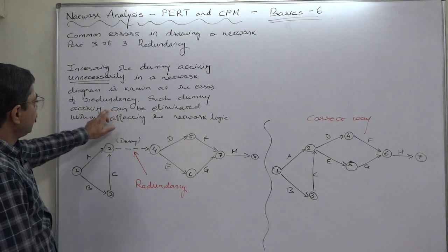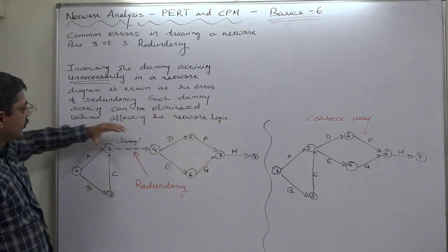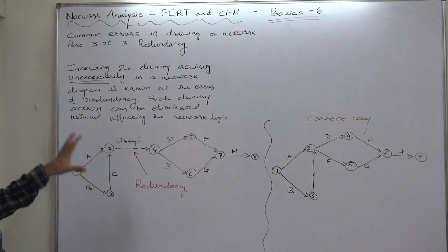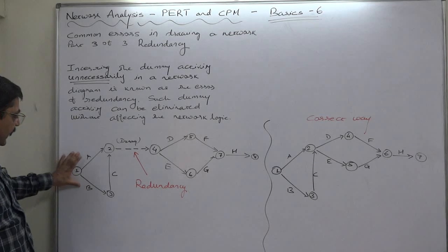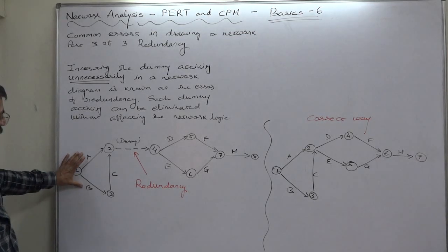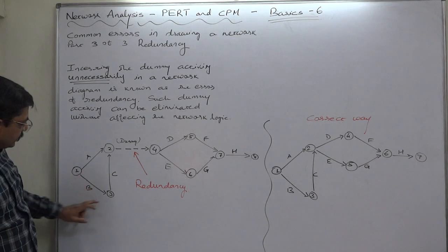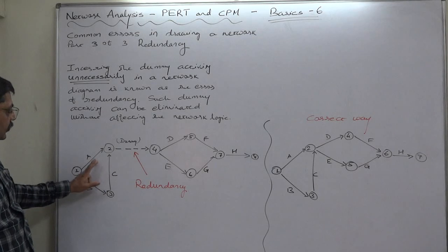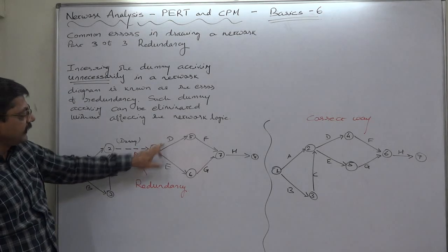Such dummy activity can be eliminated without affecting the network logic. Just see this diagram. The starting point A and B, one is burst event, activities A and B. B is predecessor of C. C and A both are predecessor of actually D and E.